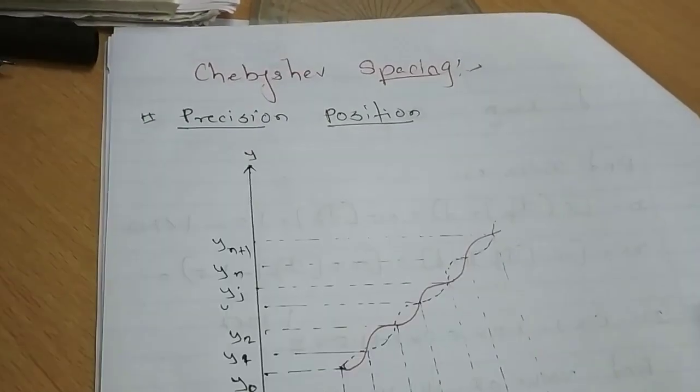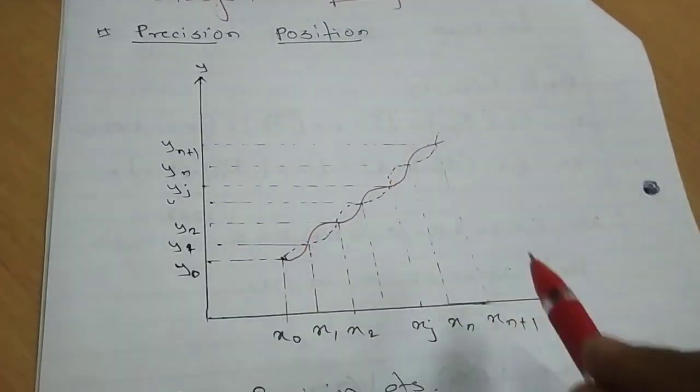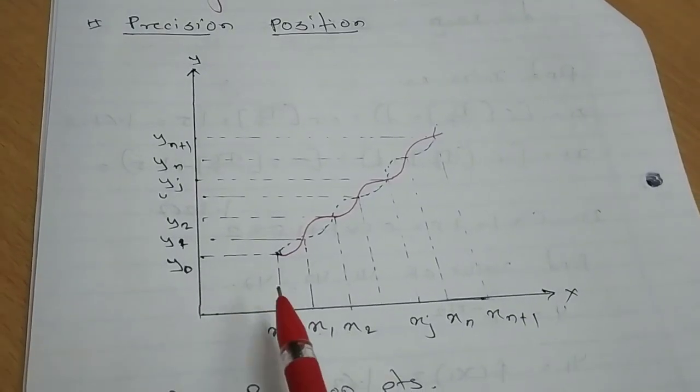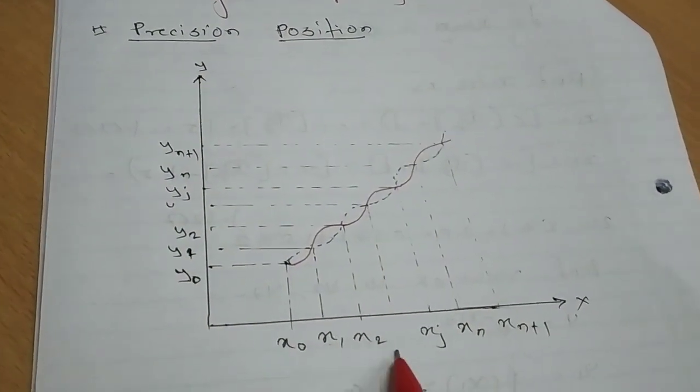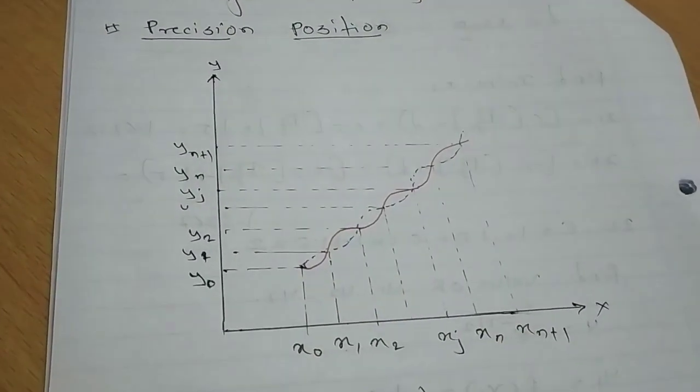Now let me show you one graph. So here we have, I just drawn it. Here we have the x-y plane where we have the x position of input link, y position of output links.